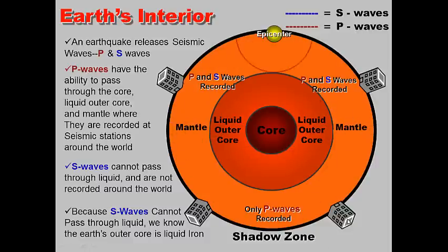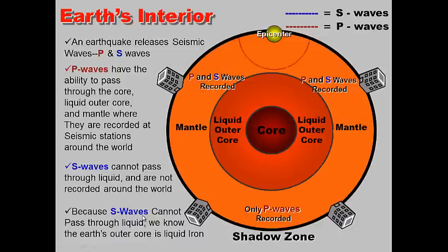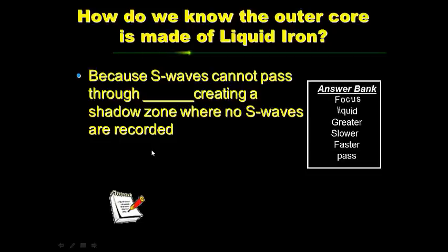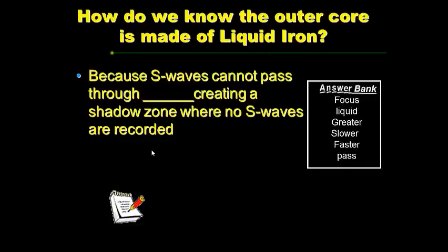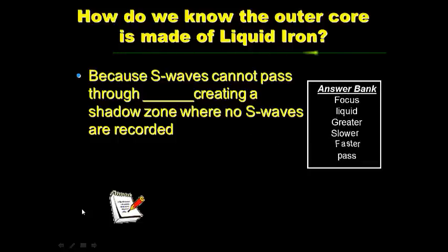Because S waves cannot pass through liquid, they are not recorded at stations in the shadow zone on the opposite side of Earth. Scientists used this discovery to determine that the outer core must be made of liquid — specifically liquid iron. So by studying P and S waves, we know the Earth's outer core is liquid iron. S waves cannot pass through liquid, creating a shadow zone where no S waves are detected. Use the answer bank and pause to complete your notes.